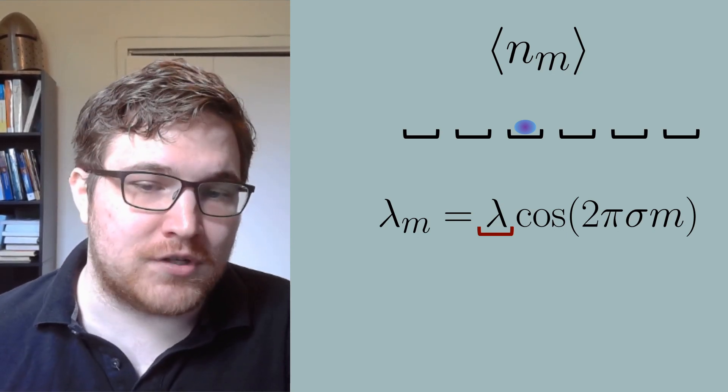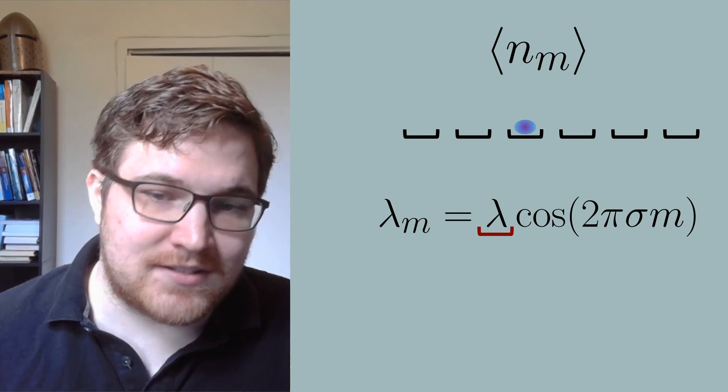Throughout the numerical experiments, we will generally increase lambda, which will increase the disorder, and then we will discuss the effects that changing lambda has on the dynamics of the electrons. So first up, let's discuss how the electron behaves if lambda is set to zero, which is the case corresponding to no disorder.